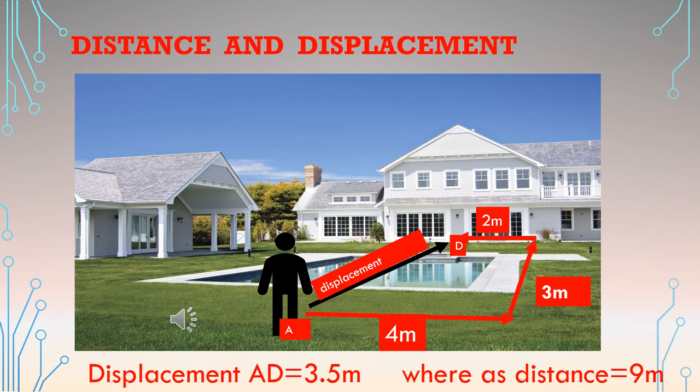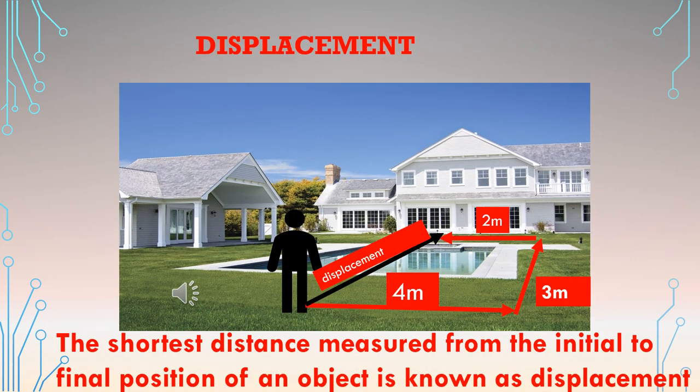So the displacement is only 3.5 meters whereas the distance travelled is 9 meters. The shortest distance measured from the initial to the final position of an object is known as displacement.